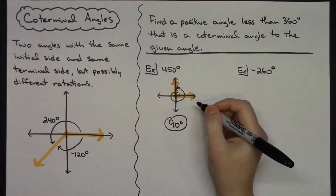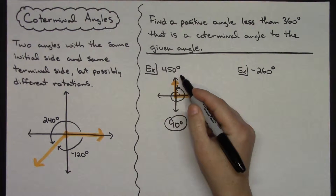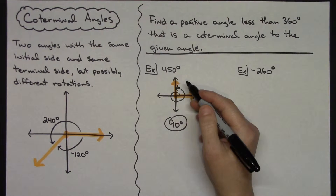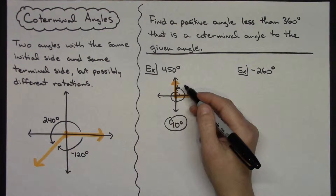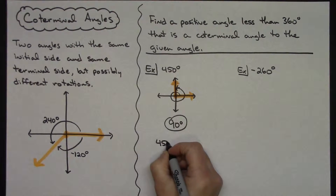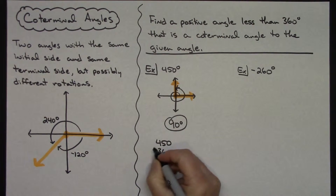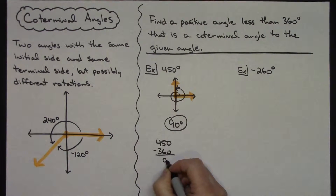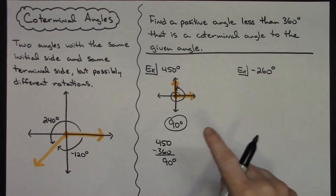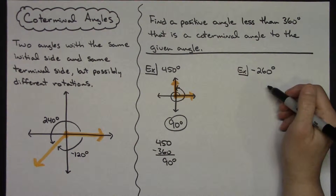You won't always have to draw a picture. You can clearly see it's over 360 degrees, so you can subtract 360 degrees — however many times you need to, once if it's only one time around the circle, twice if it's twice around — until you get a positive angle less than 360. In this case, 450 minus 360 equals 90, because it was only one time around the circle plus a little bit more.